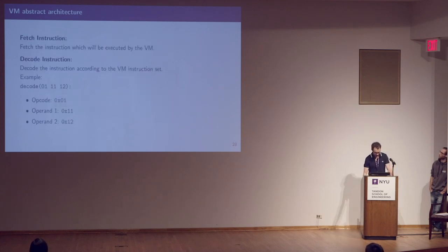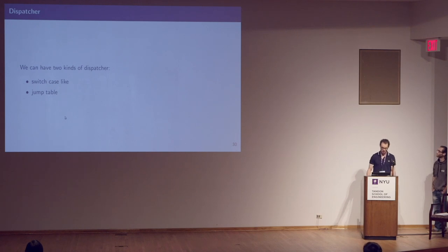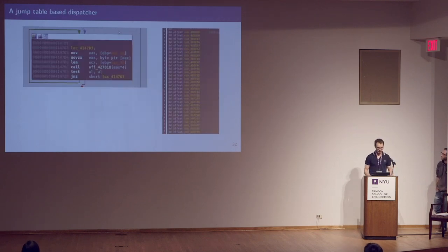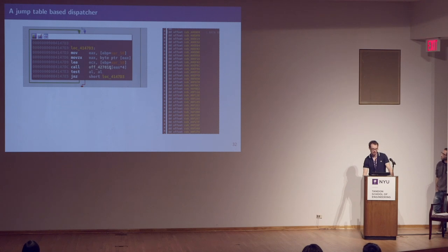For example, decoding an instruction might split it into an opcode and two operands. For the dispatcher block, there are two kinds. The first is a switch-table style: a succession of if-else blocks where here is the dispatcher, here is the handler, and here is the decode and fetch instruction. For the jump-table dispatcher, we have a table holding the VM handlers, and a register like EAX is used as an index in this table. The dispatcher calls the right handler depending on the value in the register.